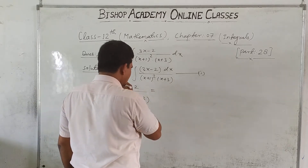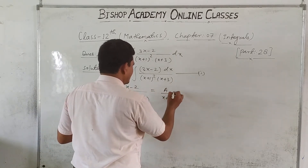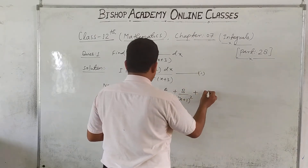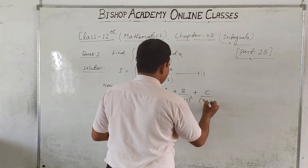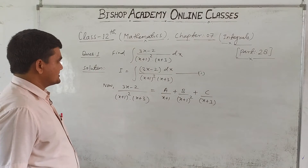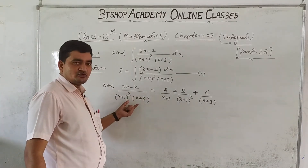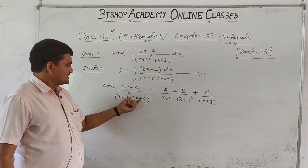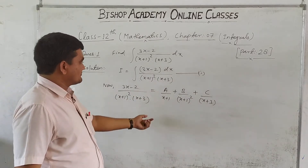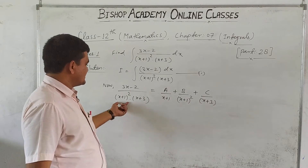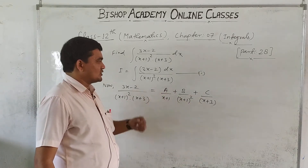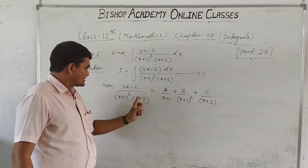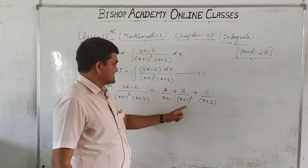This is equal to A upon (x+1) plus B upon (x+1)² plus C upon (x+3). As told in the previous video, when we have the form (x+q) upon (x+a)² into (x+b), the partial fraction is written as A upon (x+a) plus B upon (x+a)² plus C upon (x+b).